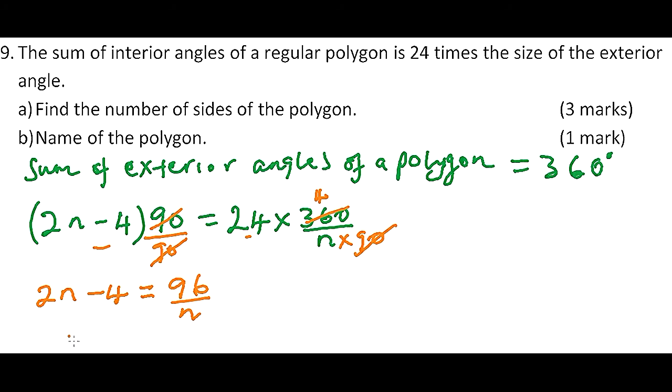Which is n squared minus 2n minus 48 equals to 0. So this quadratic equation, we will now be able to solve this using the factorization method.